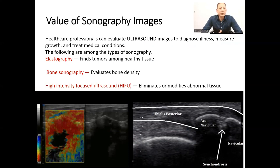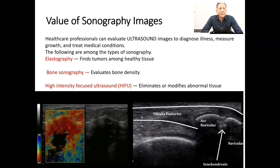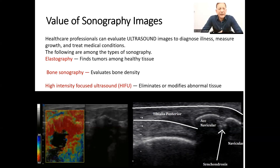Elastography is a type of imaging test that checks an organ to see if there is stiff tissue present or if it is normal parenchyma. Stiff areas in an organ are a sign of disease, and it is commonly used in cirrhotic patients or those with liver failure.